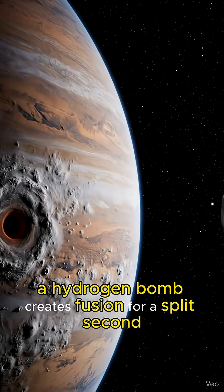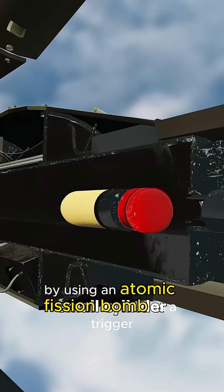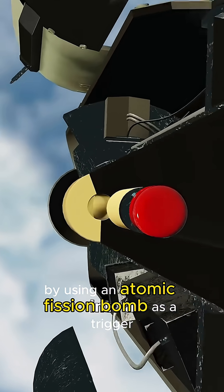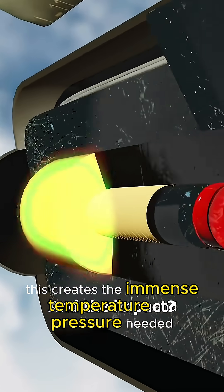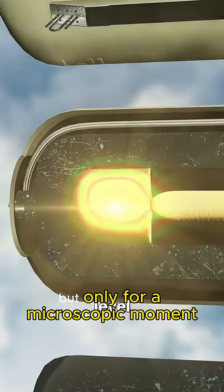A hydrogen bomb creates fusion for a split second by using an atomic fission bomb as a trigger. This creates the immense temperature and pressure needed, but only for a microscopic moment.